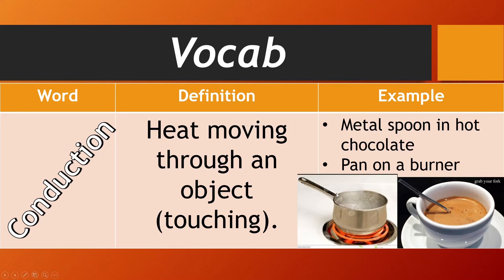For example, here you have the pot on the burner — the electric burner — and they are touching, so the heat from the electric burner passes up to the pot and then that heats up the water. We also have the metal spoon in the hot chocolate, so if you put the metal spoon in your hot chocolate and forget about it,